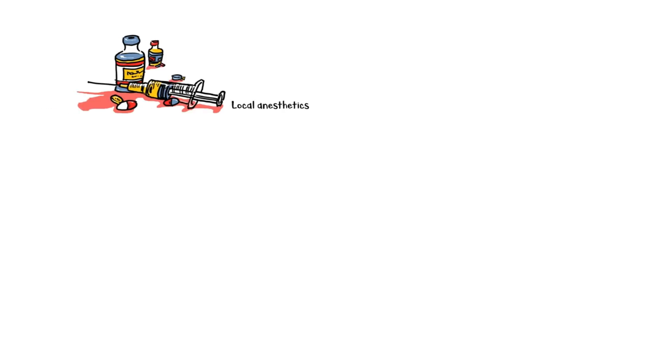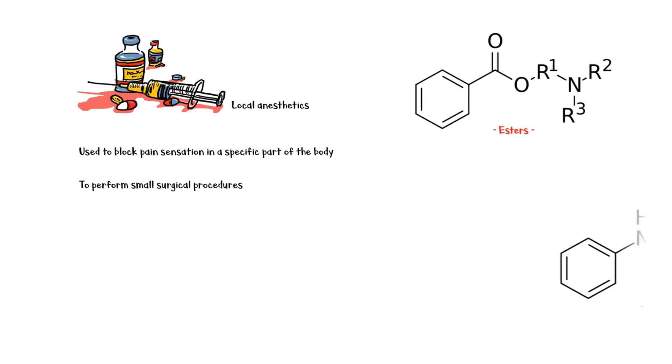Local anesthetics are medications used to block pain sensation in a specific part of the body in order to perform small surgical procedures. There are two classes of local anesthetics: esters and amides.